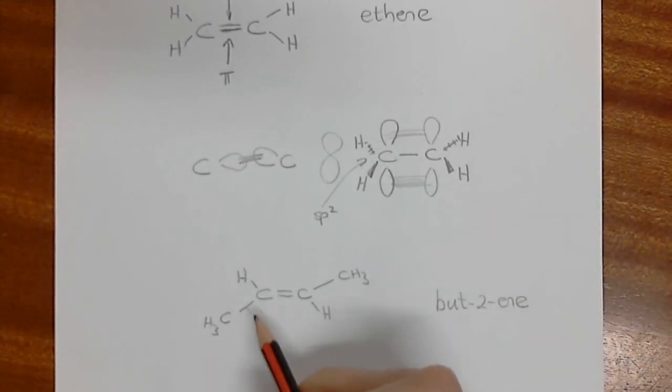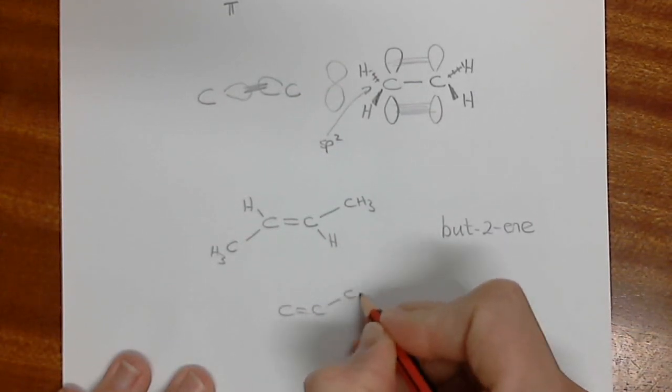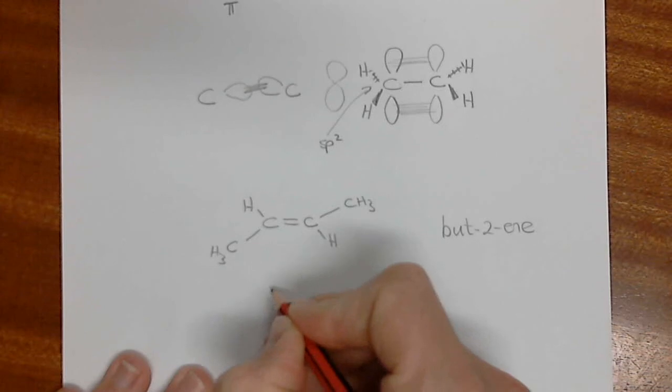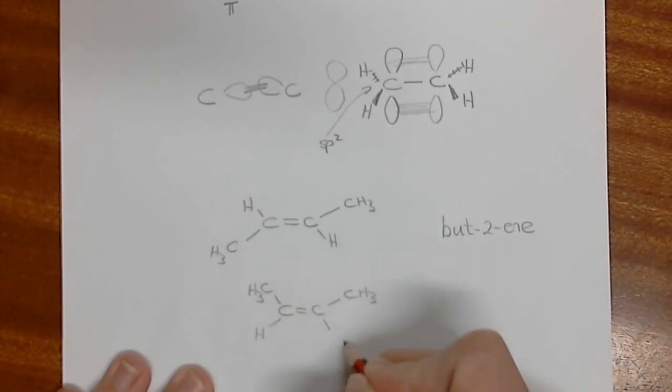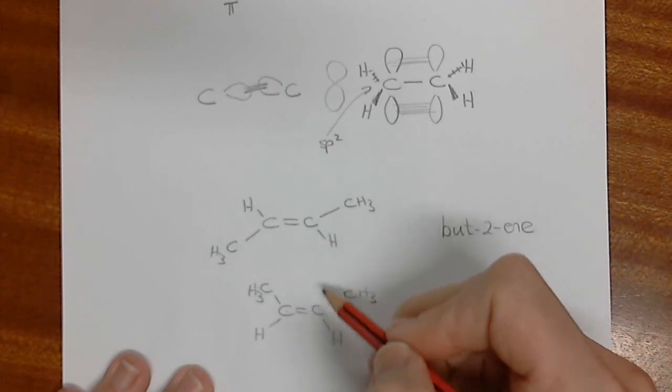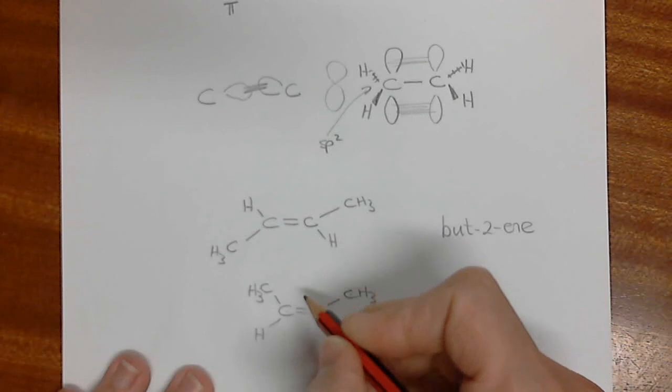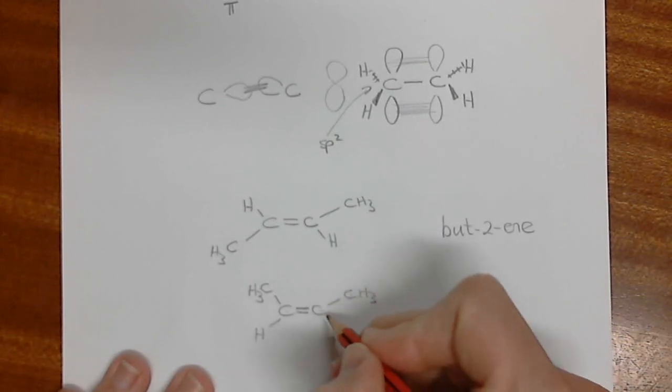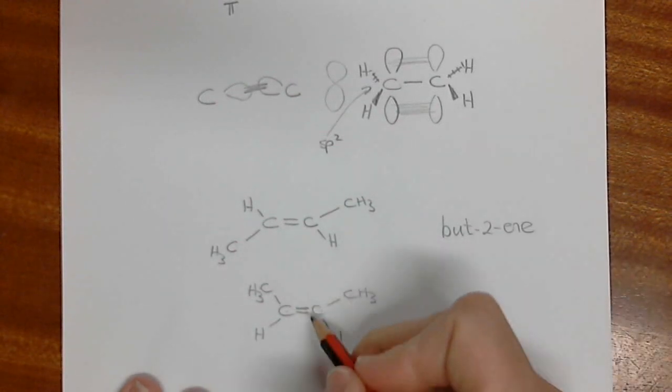This molecule here and this very similar looking one, which has exactly the same name, already four carbons, so it's still but-2-ene. These two molecules are actually not the same thing, and it's the consequence of this pi bond which makes it not the same thing, and that's something that we're going to be looking at in class is understanding that.